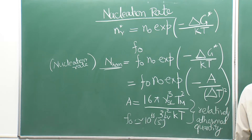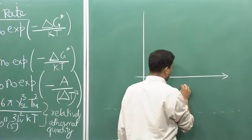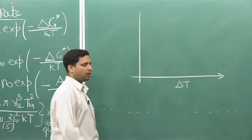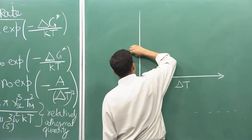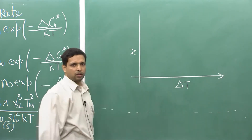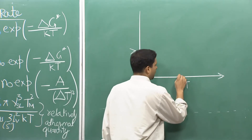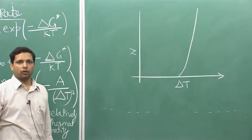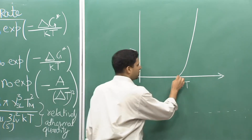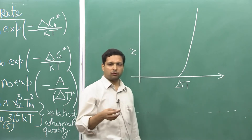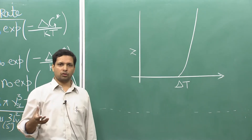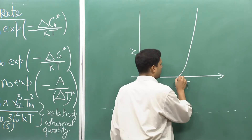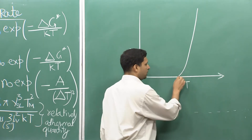If we try to plot the nucleation rate N versus ΔT, with ΔT on the x-axis, the plot shows that the rate of nucleation suddenly increases as you drop the undercooling beyond a critical value.